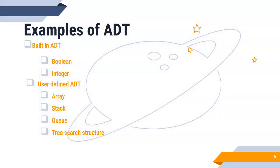Now we will discuss the abstract data type example. There are two types of abstract data type: built in as well as user defined data types. Built in data types are Boolean, which means true or false. It has two logical values either true or false.